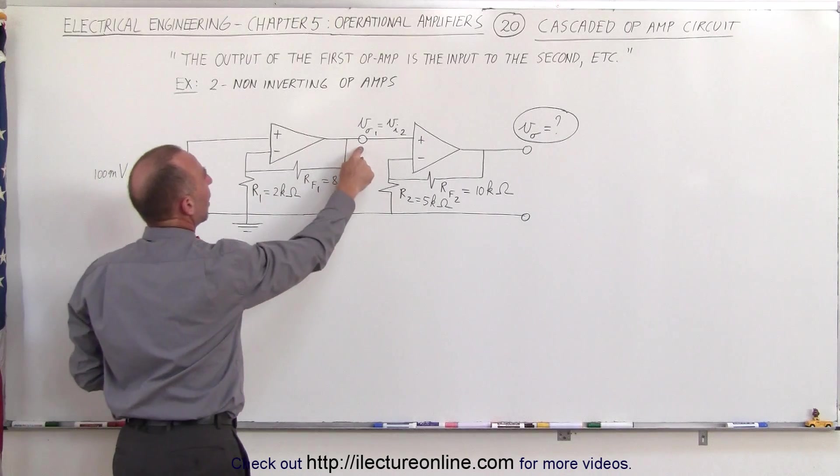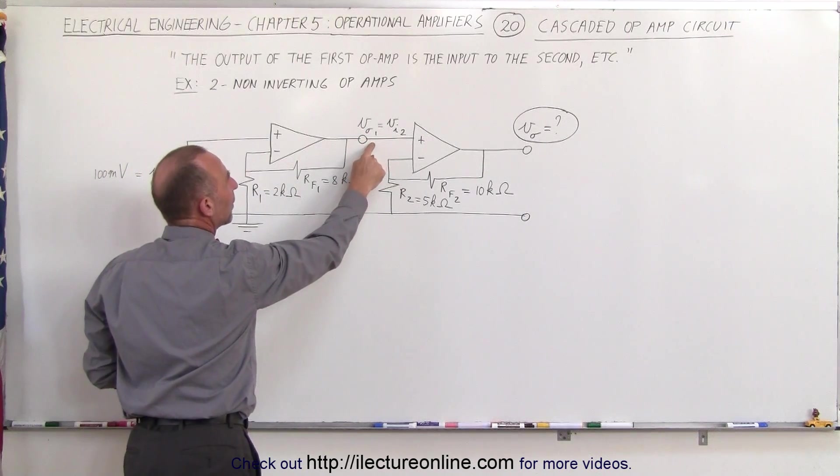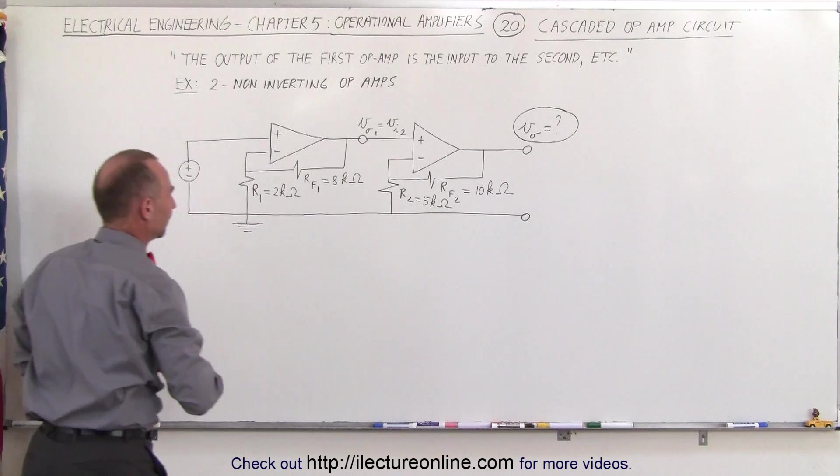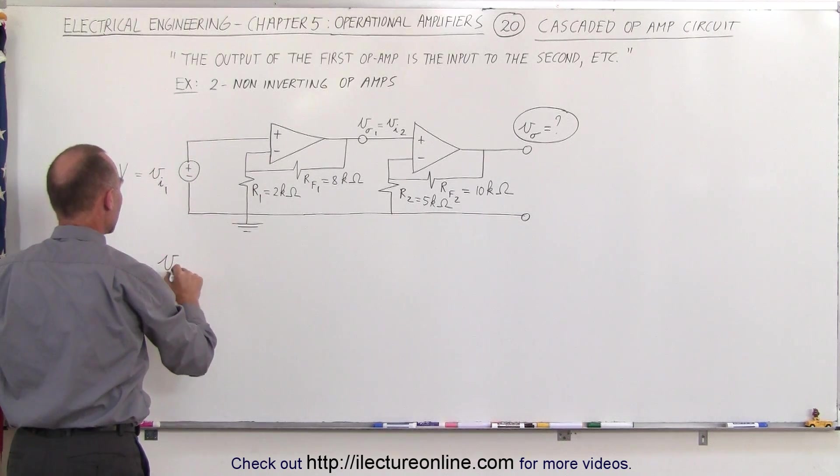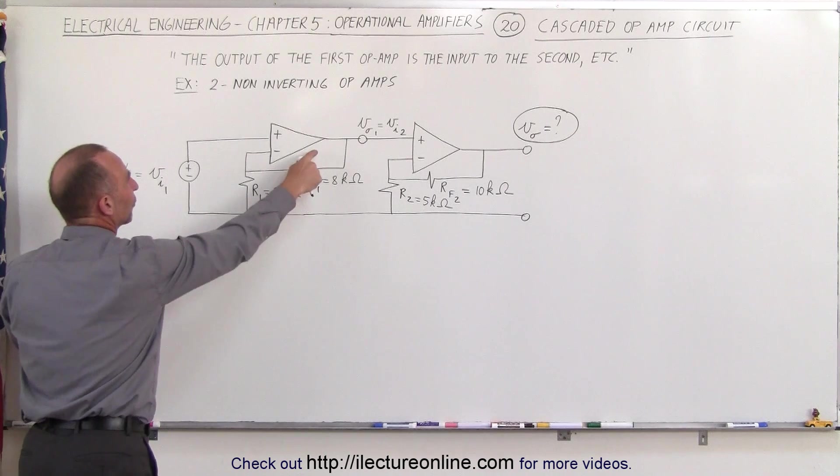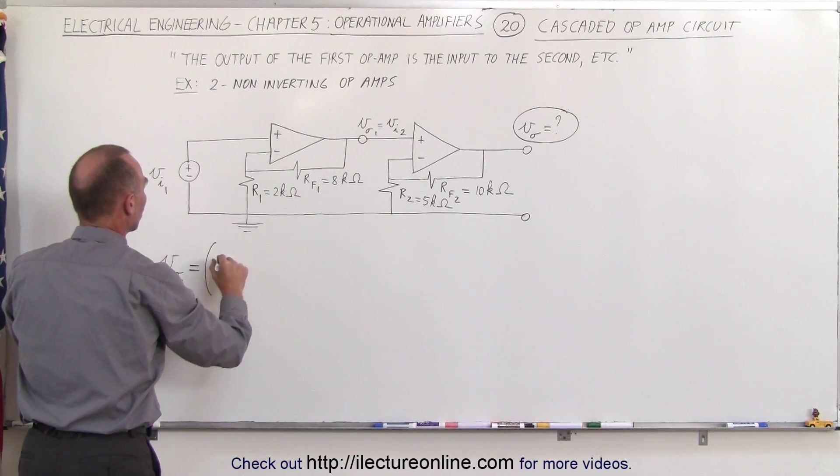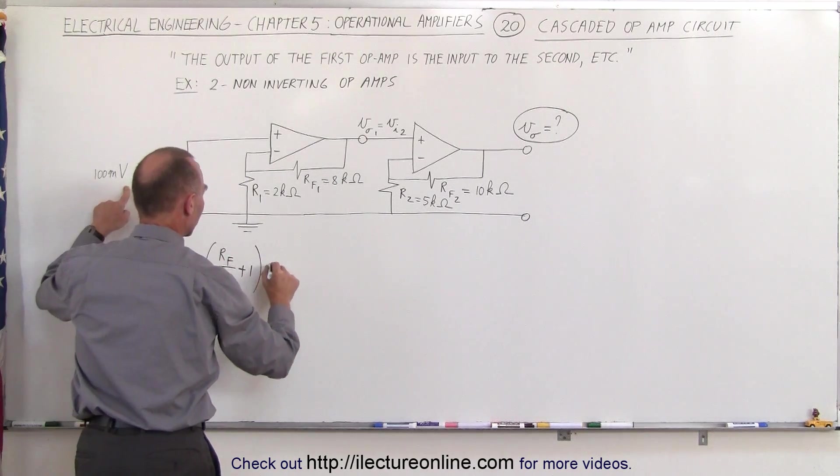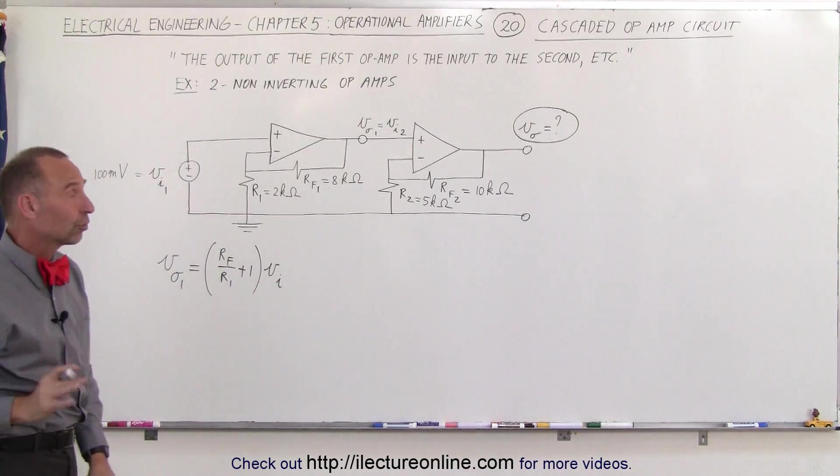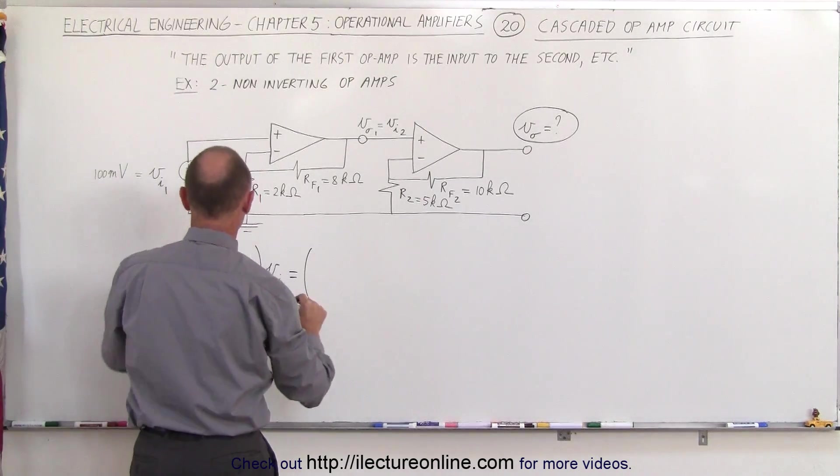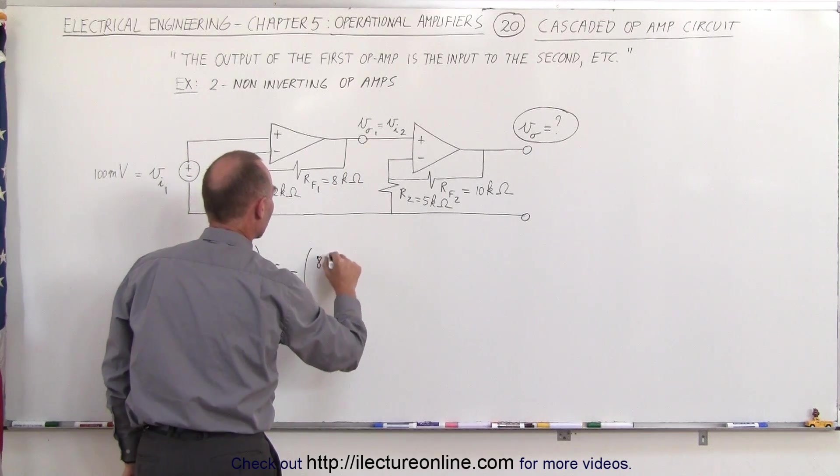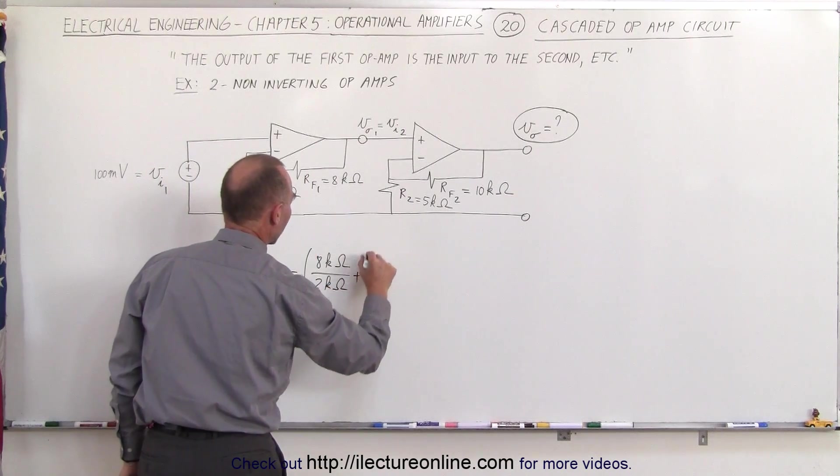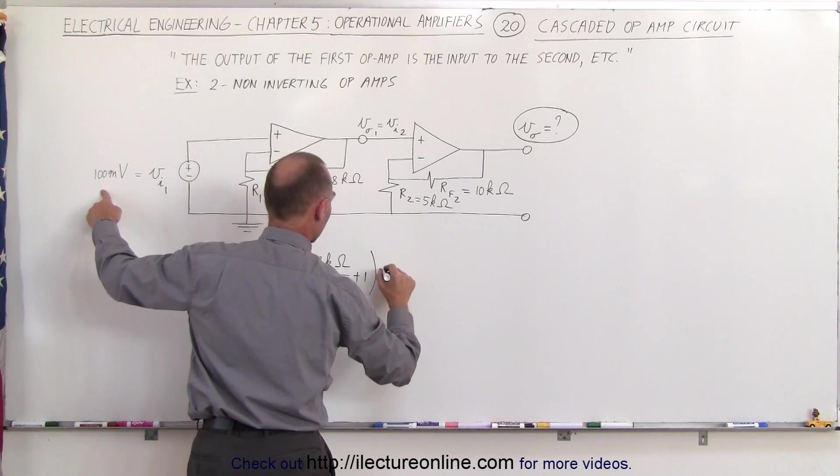The output of the first operational amplifier, let's call it V output for one, that becomes the input of the second operational amplifier, again connected to the non-inverting terminal there. So what we can write then is that V0 sub 1, the output of the first op-amp, is going to be equal to the ratio of RF over R1 plus 1 times the input voltage V sub i. If we plug in what those are equal to, this becomes the 8 kilo-ohm resistor divided by the 2 kilo-ohm resistor plus 1 times V input, which is 100 millivolts.